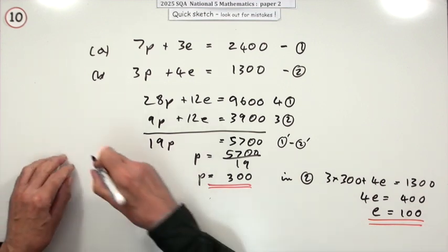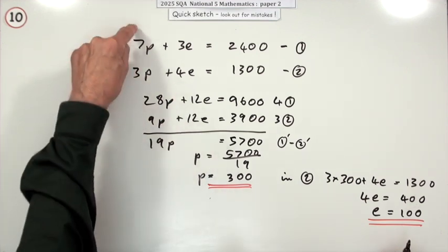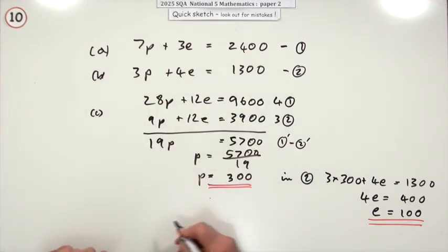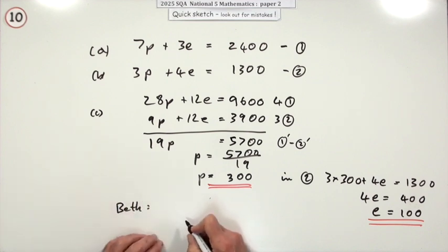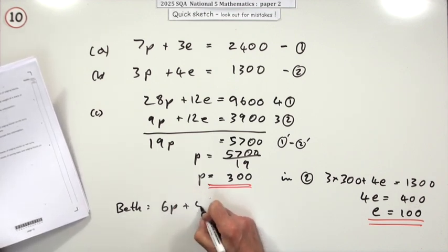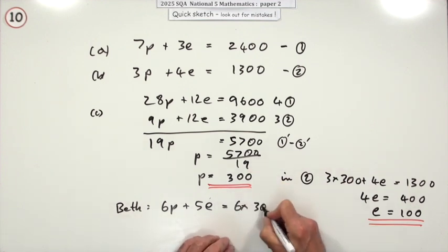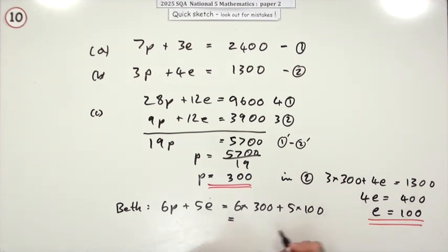So this is all part C. The last part would be, now that I know those two, you could check that with this one. Seven threes are 21, 2,100 and 300, there's 2,400. So what about Beth? Beth has 6 and 5. 6p plus 5e. That would be 6 times 300 plus 5 times 100. So you've got 18, 23. 2,300. And that'll be kilograms.